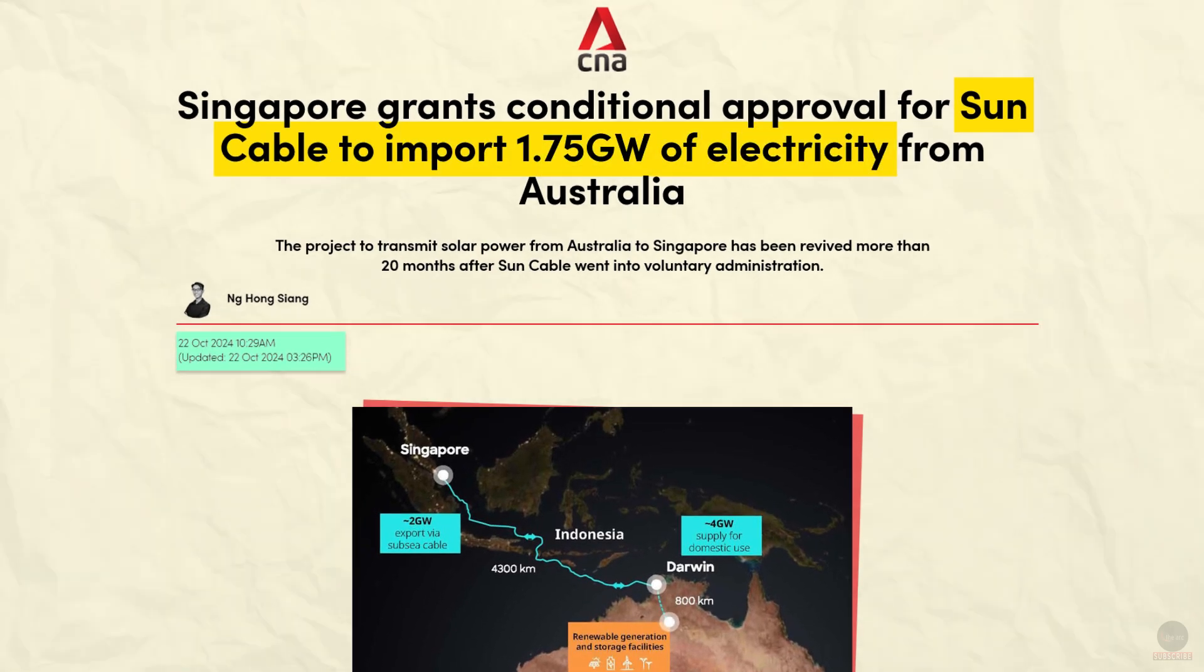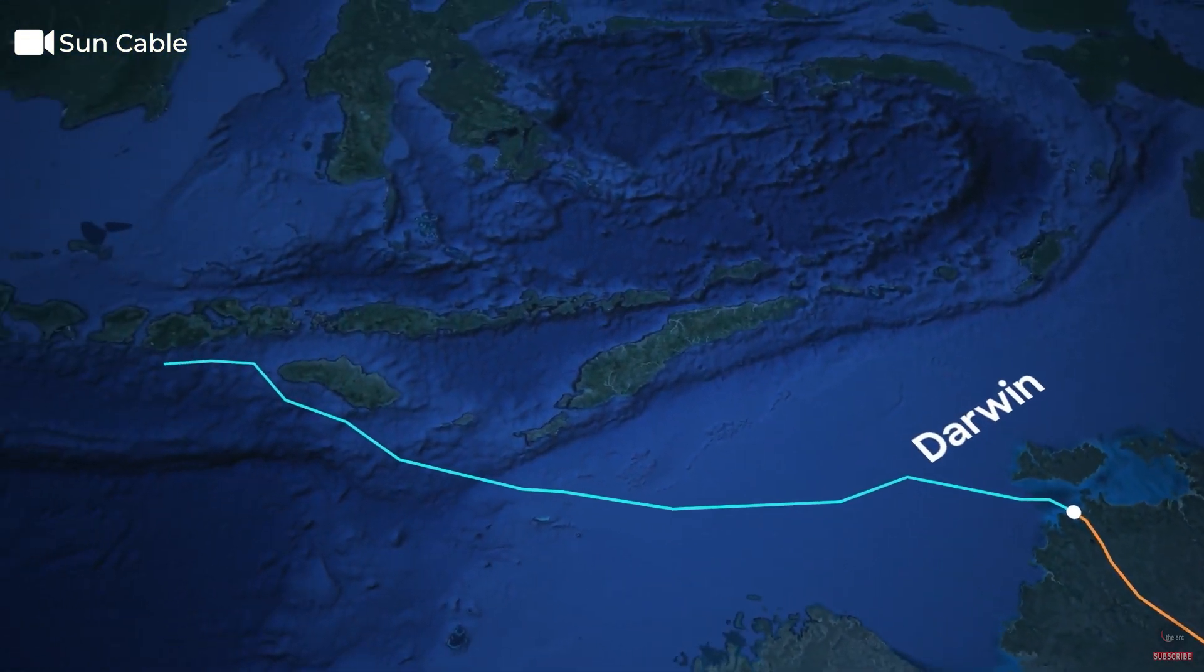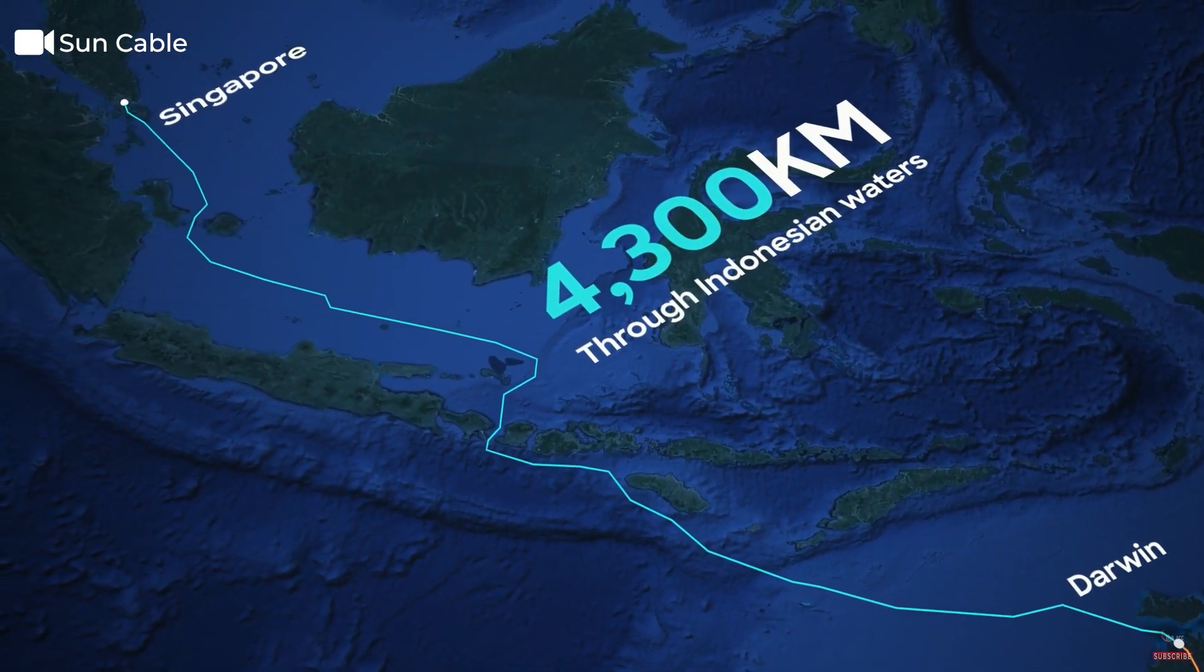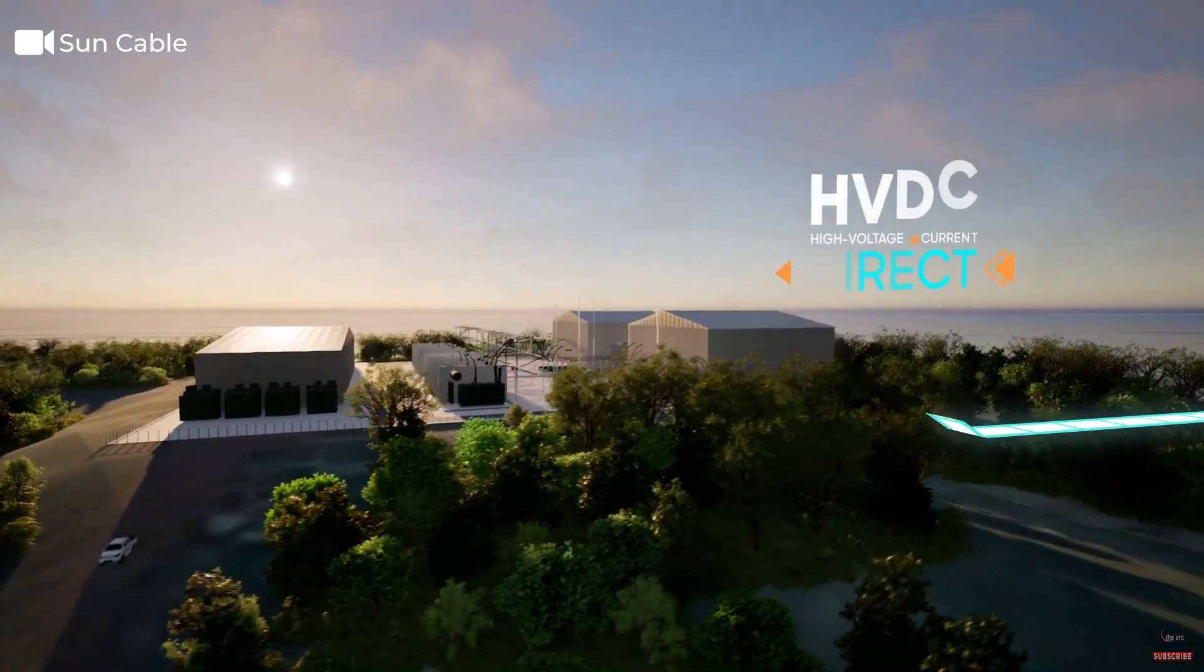Recently, it was reported that Singapore has granted conditional approval to Sun Cable to import 1.75 GW of low-carbon electricity from Australia to Singapore. So, a company named Sun Cable owned by billionaire Mike Cannon-Brookes envisaged this ambitious plan of developing world's first intercontinental power grid to supply renewable energy from Australia to Asia. The project named Australia-Asia Power Link aims to harness solar power from Australia's northern territory and transmit it via HVDC subsea cables measuring 4,300 km to Singapore.